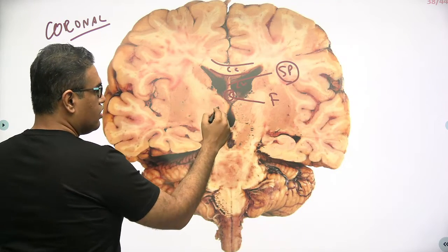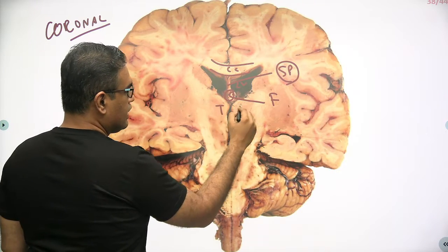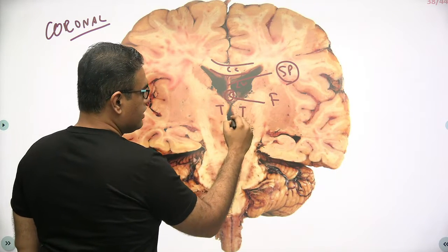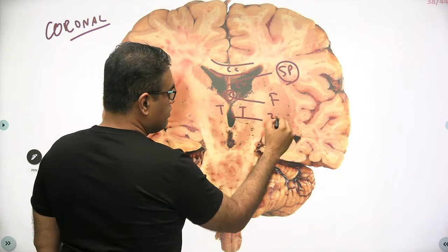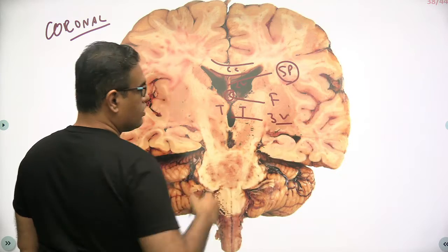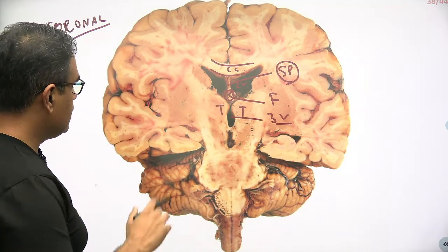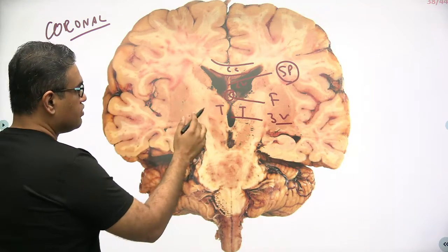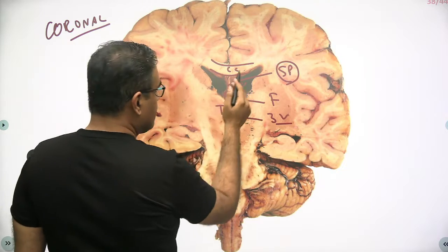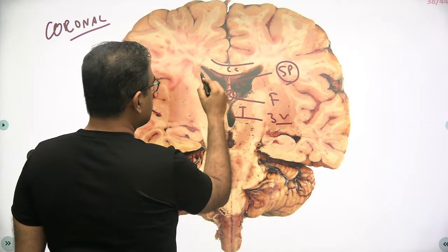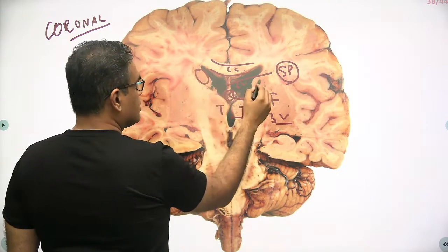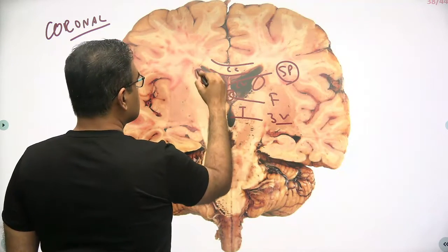This is the area of the diencephalon, where you will have the thalamus. Between the two thalami you have the third ventricle, labeled 3V. The thalamus is over here, the lateral ventricle is over here.